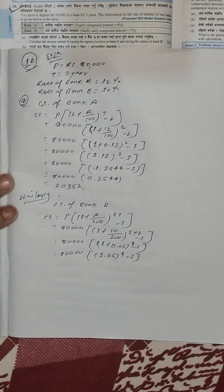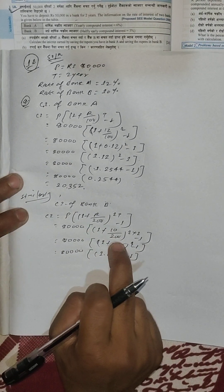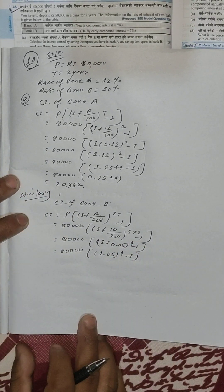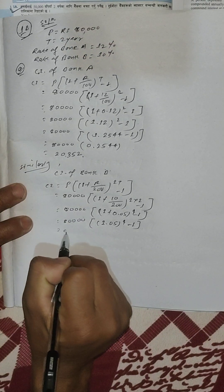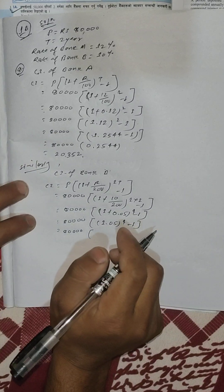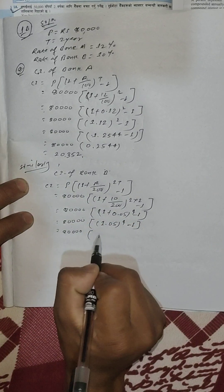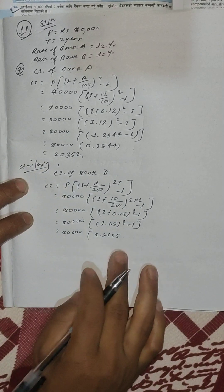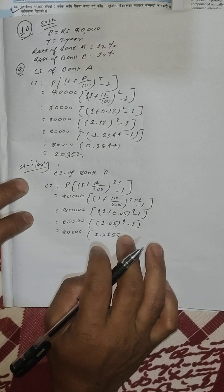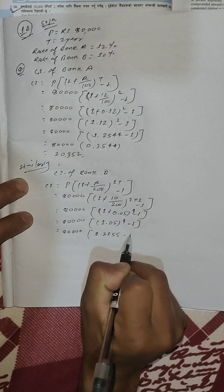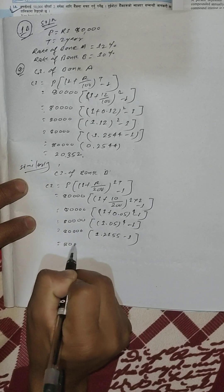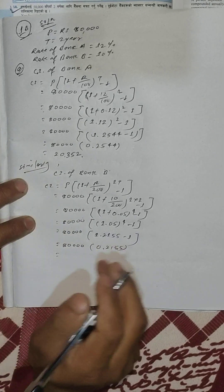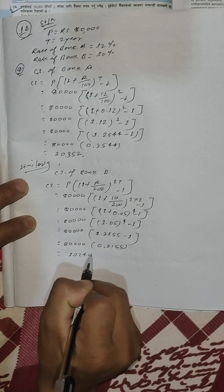1.05 to the power 4 equals 1.2155 minus 1 equals 0.2155. Multiply: 30,000 times 0.2155 equals Rs. 6,465. This is Bank B's interest.